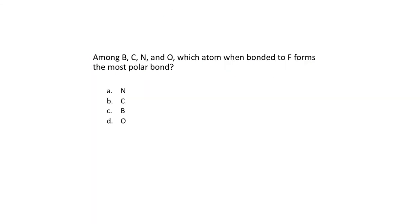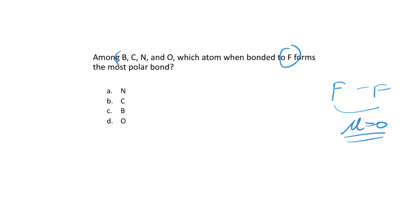Between B, C, and O, which atom when bonded to F makes the most polar bond? The least polar would be F itself — zero dipole. We want the atom with the lowest electronegativity, since electronegativity increases toward F. The greatest difference in electronegativity gives the most polar bond, which would be the B-F bond. The O-F bond might seem large, but O and F are both highly electronegative, so their difference isn't that great.